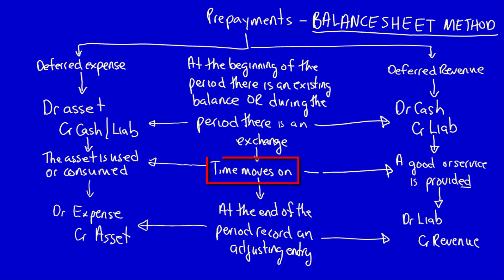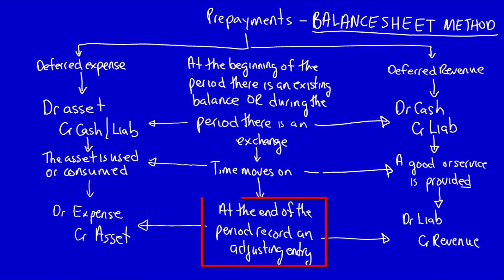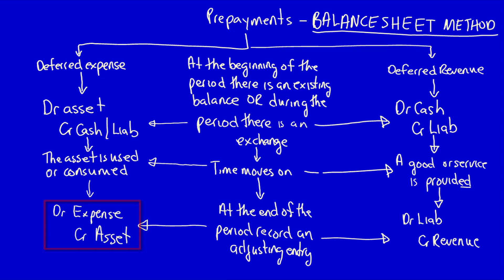Then time moves on and during the period the asset is used or consumed. At the end of the period we have to record an adjusting entry because we've got an asset which no longer has as much future economic benefit. Therefore it's no longer an asset — it becomes an expense because it's being used or consumed. So we debit the expense and credit the asset to draw down the asset because it doesn't have the same future economic benefit.